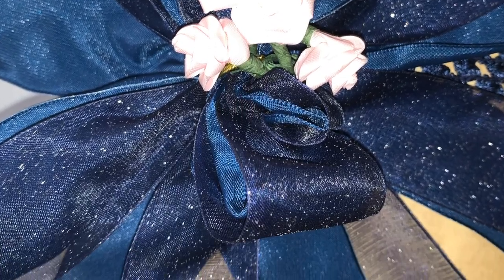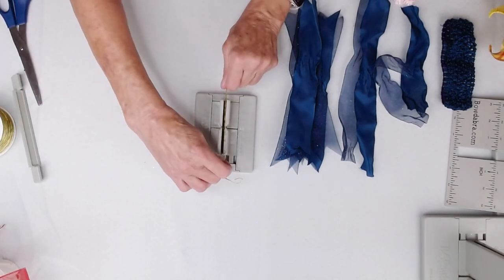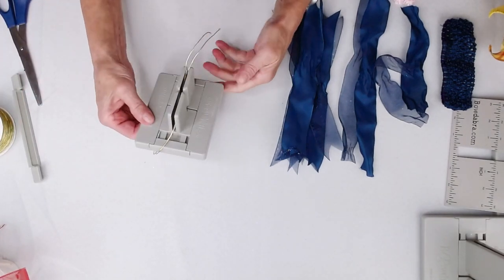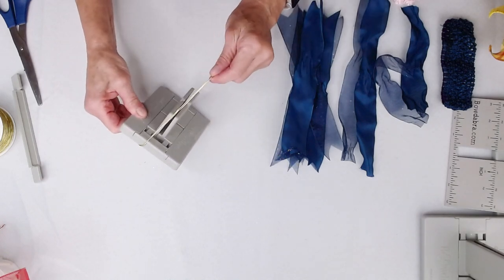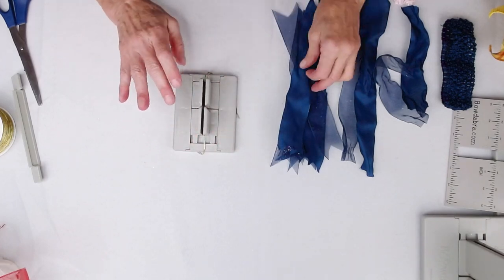I'm going to start with my mini bowdabra. I'm going to take my bowdabra bow wire, fold it in half, and lay this down into the mini and just tuck the ends underneath so they don't go flying all over the place.